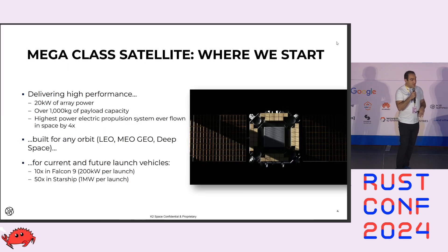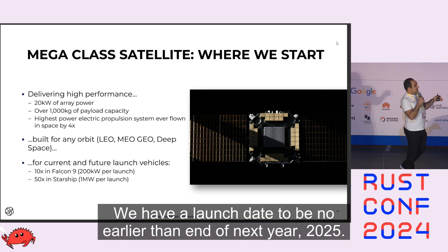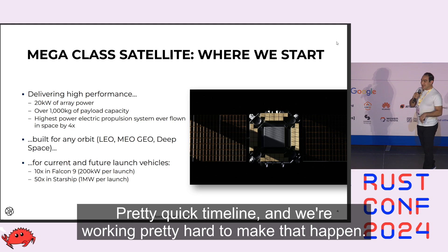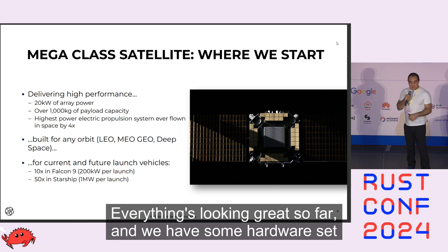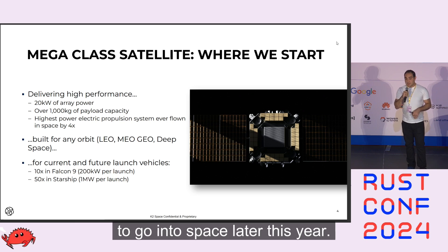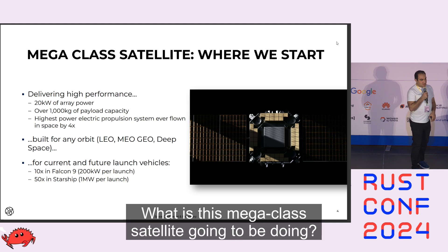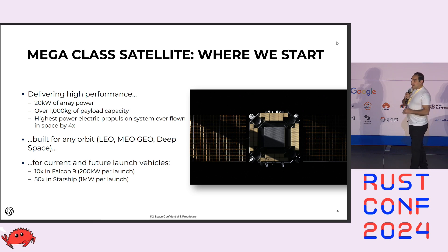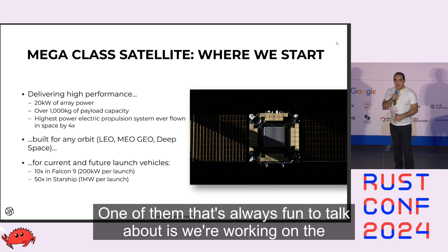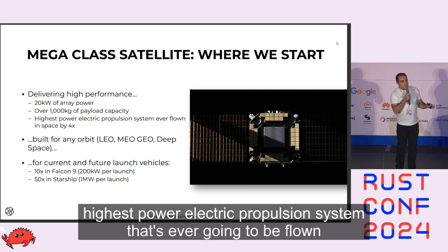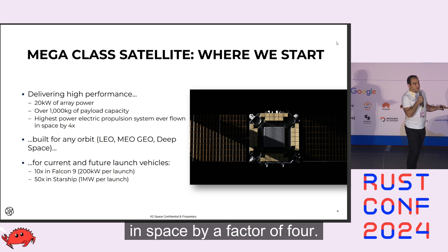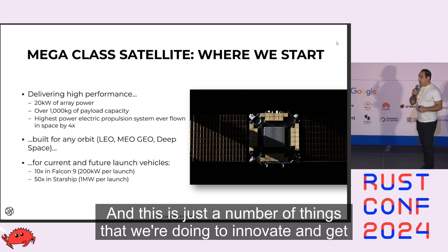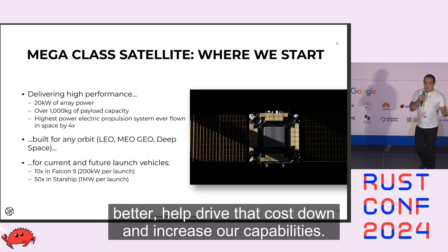This is a satellite we're working on right now. We're expecting to launch it — we have a launch date no earlier than end of next year, 2025. Pretty quick timeline and everything's looking great. We have some hardware set to go into space later this year. The Mega Class satellite has 20 kilowatts of array power and over 1,000 kilograms of payload mass. We're also working on the highest-power electric propulsion system ever flown in space — by a factor of four.